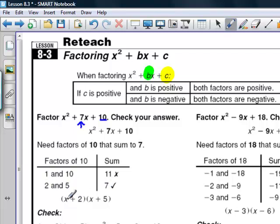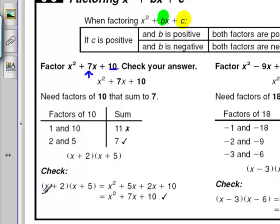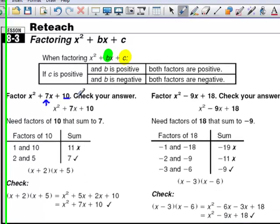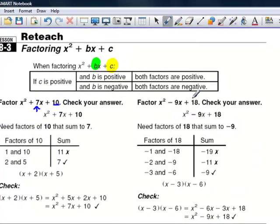We place them in (x + 2)(x + 5). We automatically know the form is x plus something times x plus something, because both factors have to be positive since c and b are both positive. We use the FOIL method to check our answer, and when we multiply everything out we get x squared plus 7x plus 10, which is what we started with.